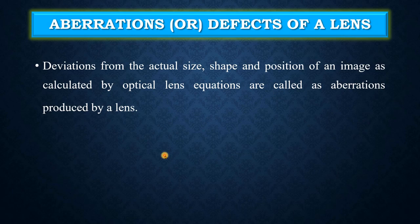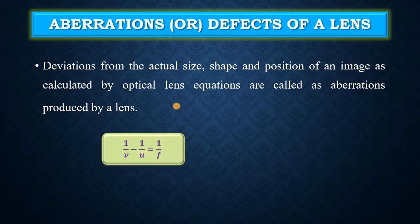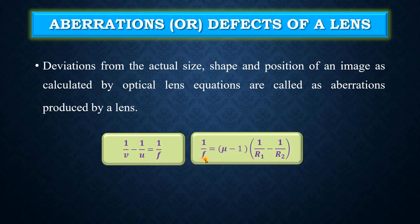Let us understand this definition part by part. Optical lens equations are nothing but the equations which we use to calculate image distance, focal length, etc. One of those equations is 1/v − 1/u = 1/f. Another one is 1/f = (μ − 1)(1/R₁ − 1/R₂). These equations are known as optical lens equations.